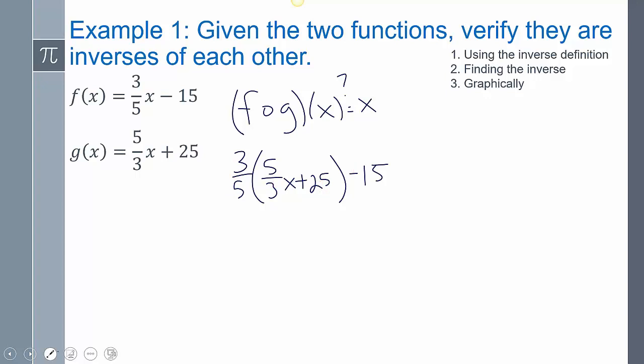So now I need to simplify that. Well, to do that, I'm going to distribute, and so now this will cancel out. Three times 25 is 75. Or I can just cancel out the fives here, so then I have three times 5, which is 15. And then I still have the minus 15. 15 minus 15 is x.